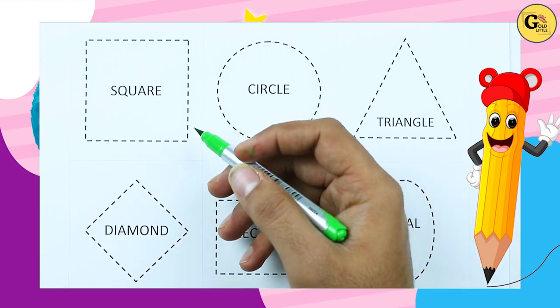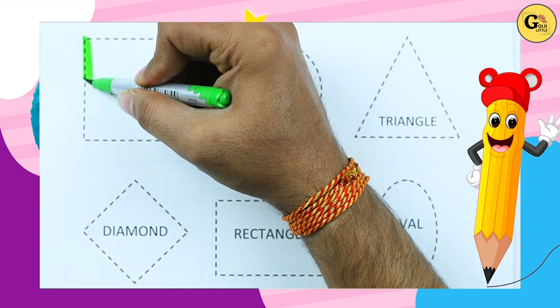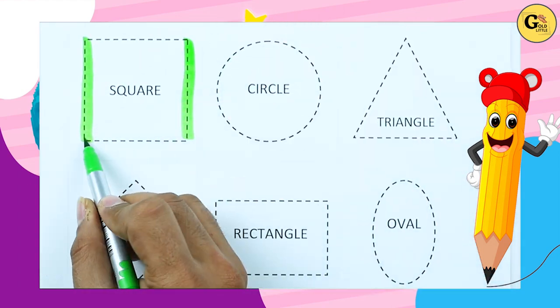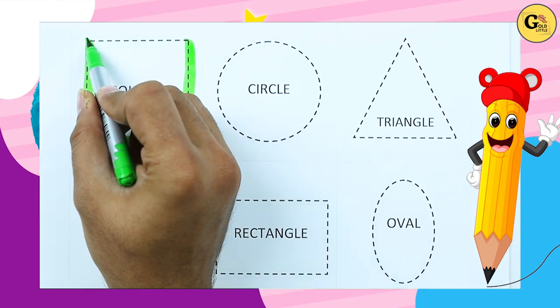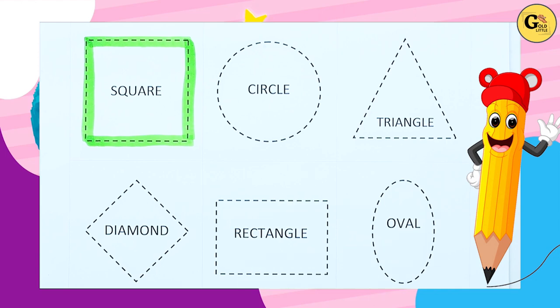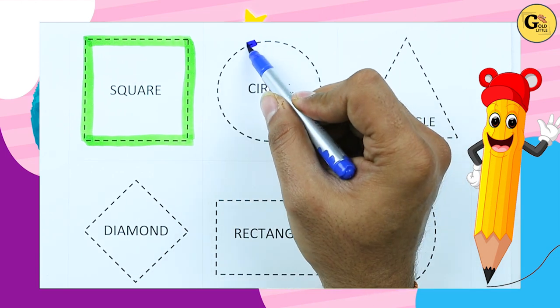It's square. One line, two line, three line, four line. Two slipping lines, two standing lines. It's called square with green color.